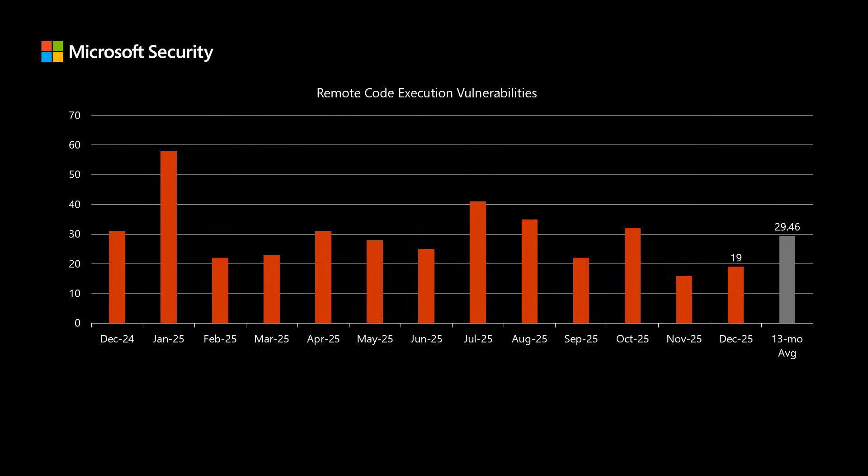Before I dig into today's release, I like to compare it to the previous 12 months to see how it stacks up. There are 56 newly disclosed CVEs in today's release. Of those, 19 fall into the remote code execution impact. This is the type of impact that typically has the highest level of risk associated with it — it would allow a threat actor to install software and perform other high-level activities. We've been averaging right around 29.5 of these per release.